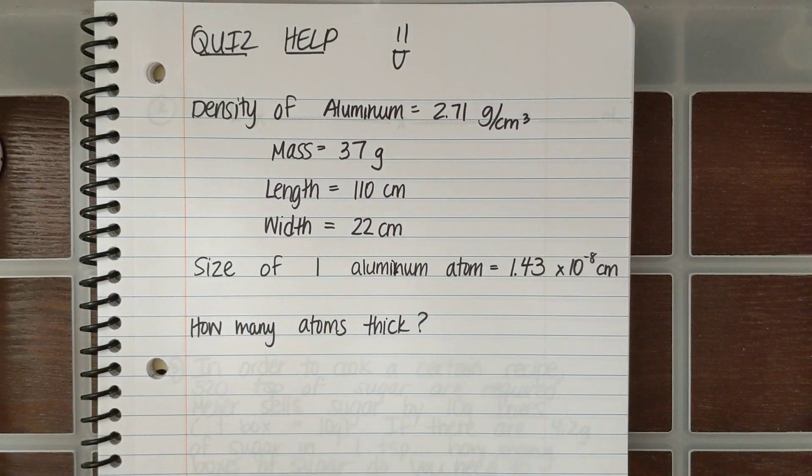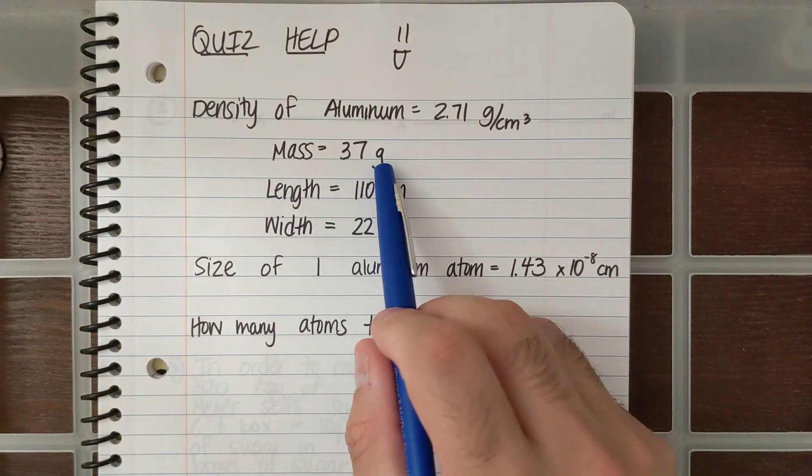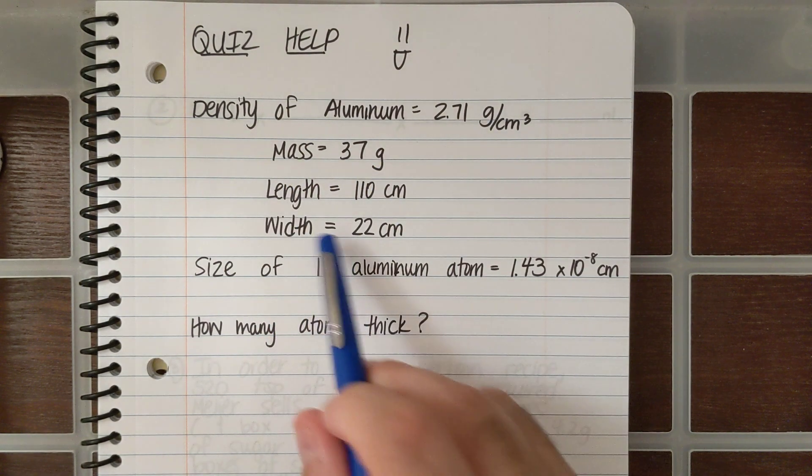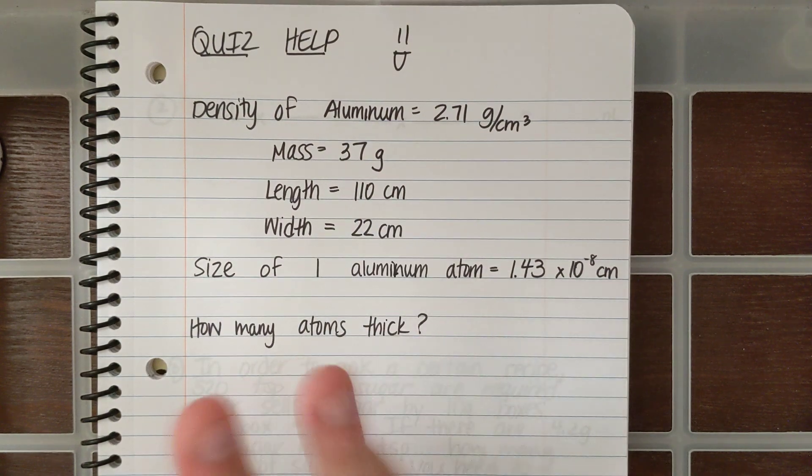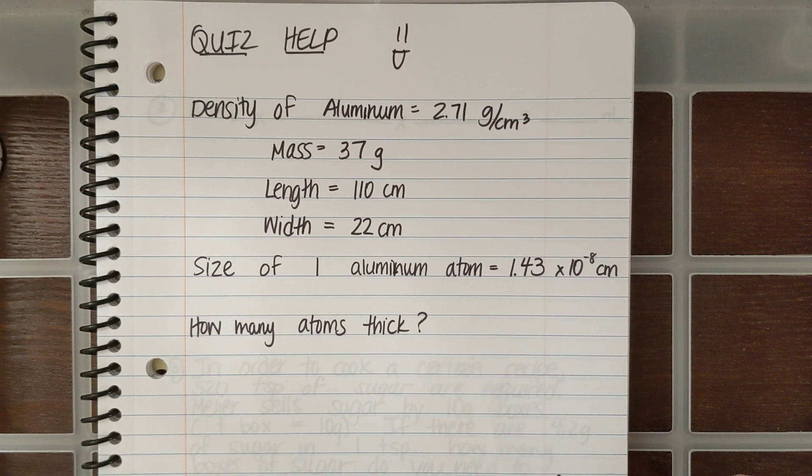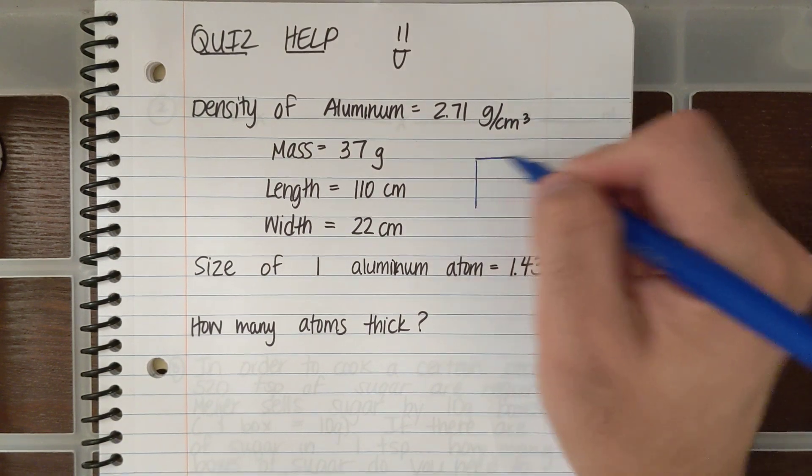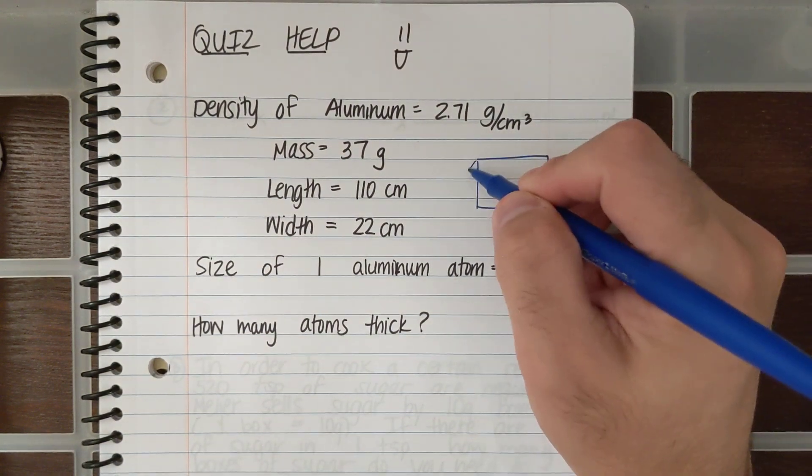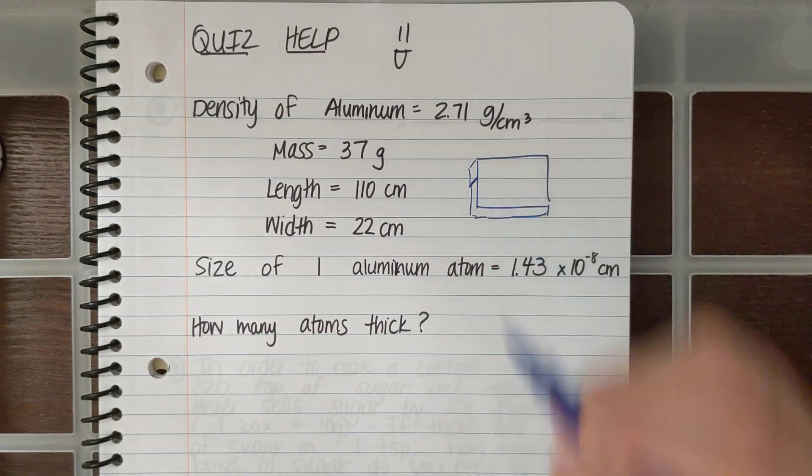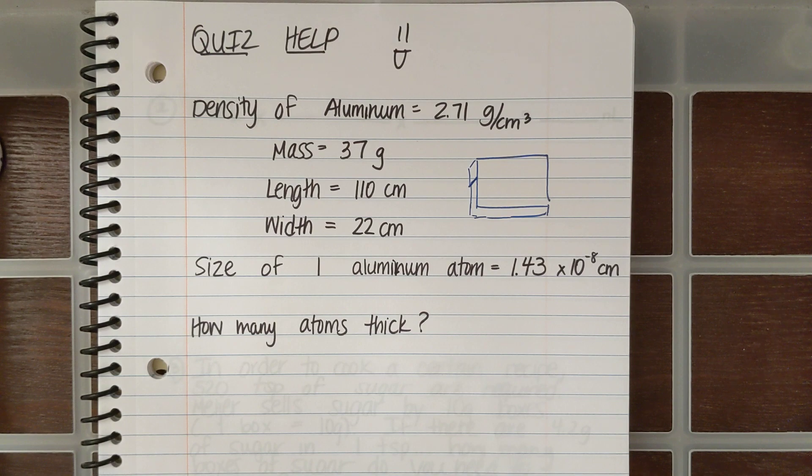So here's some information. I have the density of aluminum is 2.71 grams per centimeters cubed. The mass of an aluminum sheet is 37 grams, the length is 110 centimeters, the width is 22 centimeters, and the size of one aluminum atom is 1.43 times 10 to the minus 8 centimeters. Let's say I have like a sheet of foil that looks like this. I got its length and width and I want to know how many atoms thick is it.